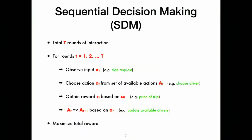Let's see how we formally study such problems. Sequential decision-making has the following setup: you have T rounds of interaction between an algorithm and nature, and T is known to everyone. In each round t you observe some part of the input — for instance, a ride request. Once you see the input, the algorithm chooses an action a_t from the set of available actions. You then receive a reward r_t which depends on a_t. Critically, after you choose action a_t, your set of actions gets updated — inputs, rewards, and the transition from a_t to a_{t+1} all depend on your action. The goal is to maximize the total reward after T time steps.